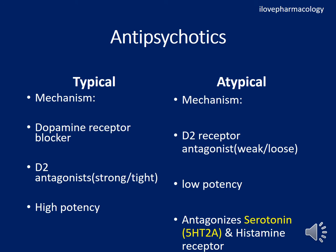Regarding mechanism of action, typical antipsychotics block the dopamine receptor — specifically they are strong D2 receptor antagonists. They have high affinity towards the D2 receptor, tightly binding to it and blocking D2 action. They have high potency towards D2 receptors.